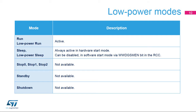The window watchdog is active in run and sleep modes. It is not available in stop, standby, or shutdown mode. In sleep mode, when the watchdog is used in software start mode, it can be enabled by clearing the low-power enable bit located in the RCC block.